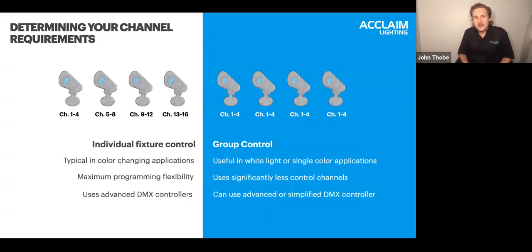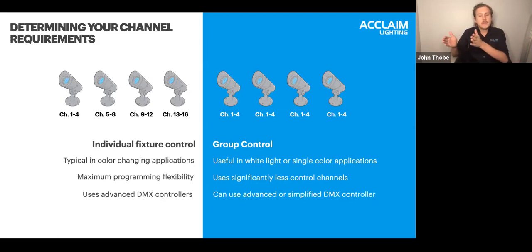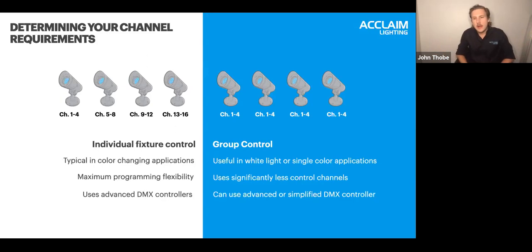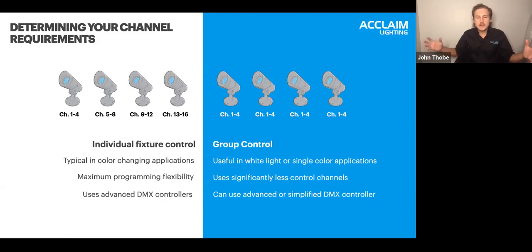Individual versus group control is very important when establishing the aesthetic of a given job. With individual control — for example, RGBW addressed per foot on a linear fixture, or a series of four floodlights each with their own address — you can apply a unique aesthetic to each fixture. Group control has all fixtures addressed the same, allowing operation on a single DMX channel for simpler, uniform performance.